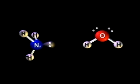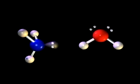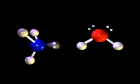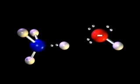Ammonia is a base in the Bronsted sense because it acts as a proton acceptor. For example, it accepts a proton from a water molecule to form the ammonium ion and hydroxide ion.